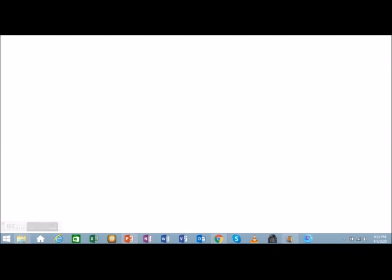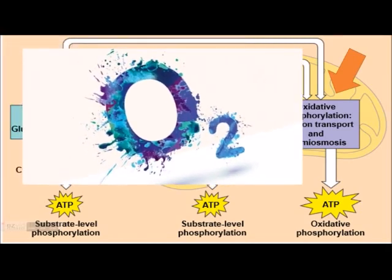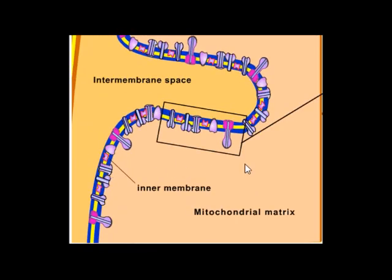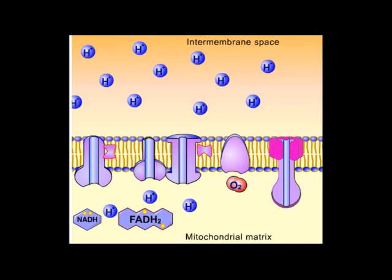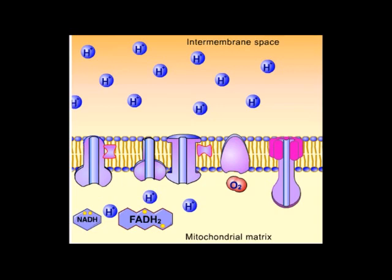The third stage of cellular respiration is called the electron transport chain, also known as oxidative phosphorylation. This process includes the formation of approximately 30 ATPs and occurs in the mitochondria in the presence of oxygen. The electron transport chain is a series of compounds localized within the inner membrane of the mitochondrion. During this stage, NADH passes electrons to the electron transport chain. As electrons are passed from NADH to oxygen, there are 3 places where protons — hydrogen ions — are moved from the matrix to the intermembrane spaces.